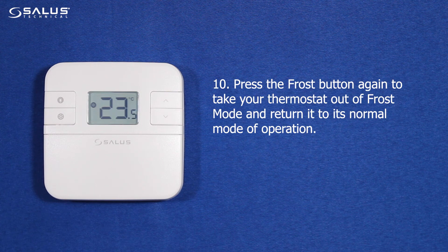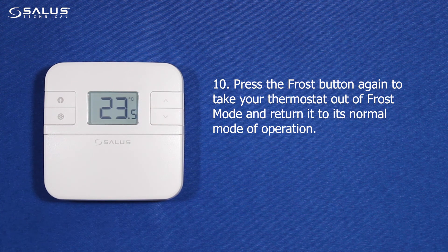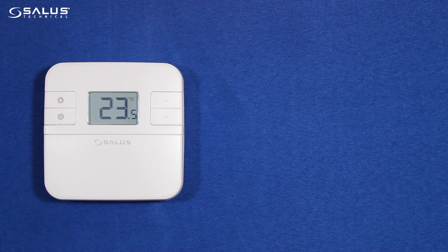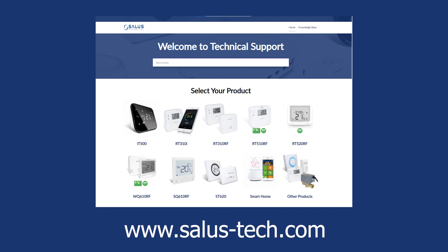Step 10: Press the frost button again to take your thermostat out of frost mode and return it to its normal mode of operation. This concludes the procedure for setting the frost mode set point temperature. For further details about installer mode settings on your thermostat, please visit our technical website at www.salis-tech.com.